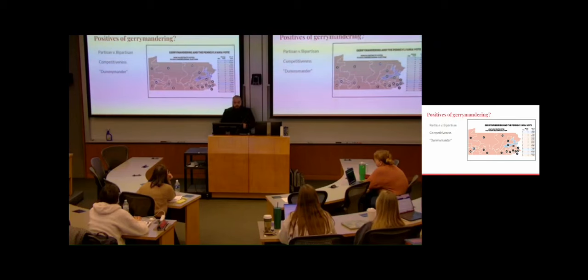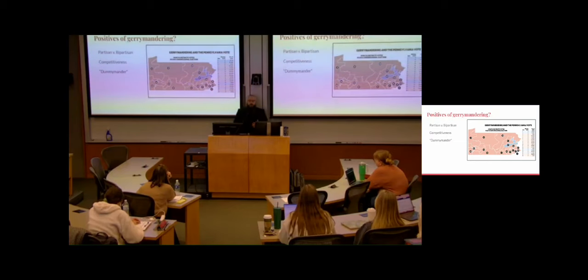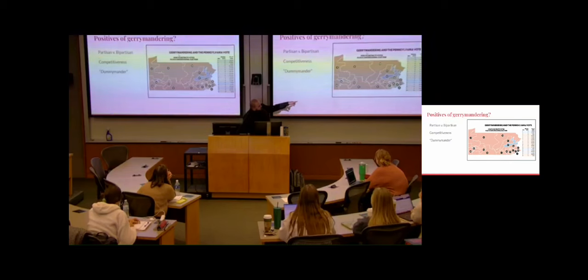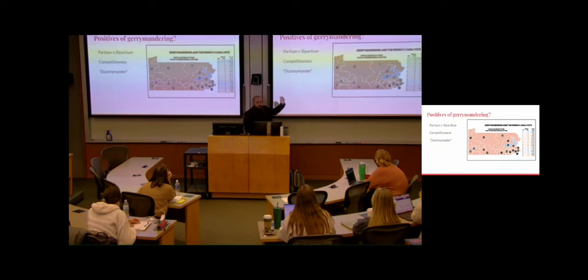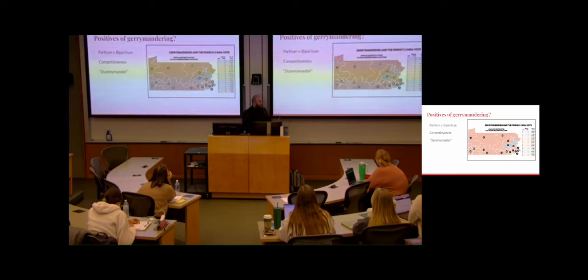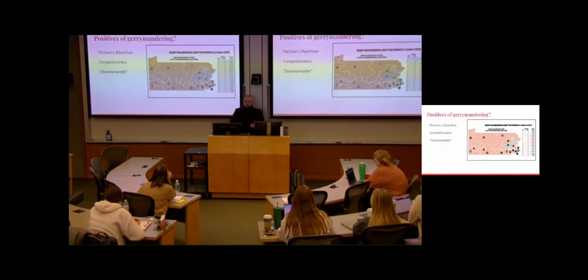The positives of gerrymandering are, quote-unquote, competitiveness. In order to do a gerrymander, you have to have a less safe district swinging your way. That's Pennsylvania from 2016. You can see the blue district down there — that's actually a Democratic district that a Republican won. That's part of what's called a dummymander, where you want it to go one way and it goes the other way. So the positive effect is you have some competitive districts by the very nature that you don't want a bunch of uncompetitive districts.